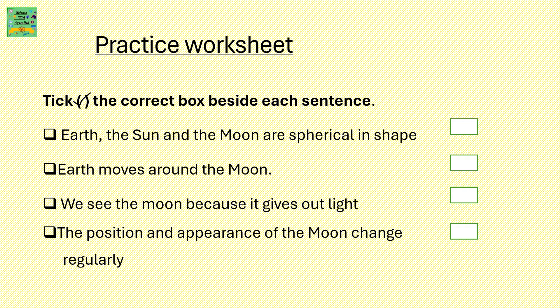Pick the correct box beside each sentence. Earth, the sun and the moon are spherical in shape. Earth moves around the moon. We see the moon because it gives out light. The position and appearance of the moon changes regularly.